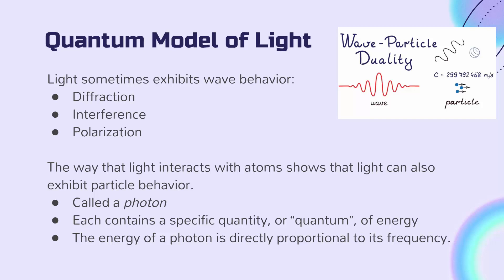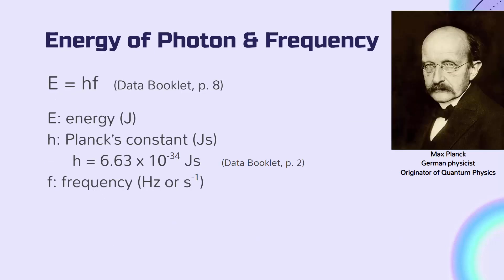The energy of a photon is directly proportional to its frequency. This relationship can be seen in the equation E equals hf, where E is the energy of the photon, h is something called Planck's constant, and f is the frequency of the photon. Planck's constant is named after Max Planck, who is a German physicist and the originator of quantum physics.